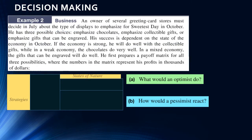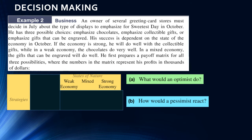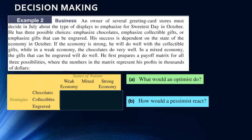Let's look at another example. An owner of several greeting card stores must decide in July about the type of displays to emphasize for Sweetest Day in October. He has three choices: emphasize chocolates, emphasize collectible gifts, or emphasize gifts that can be engraved. His success depends on the state of the economy in October. If the economy is strong, he'll do well with collectible gifts. In a weak economy, chocolates do very well. In a mixed economy, engraved gifts will do well. He prepares a payoff matrix where the numbers represent profits in thousands of dollars.